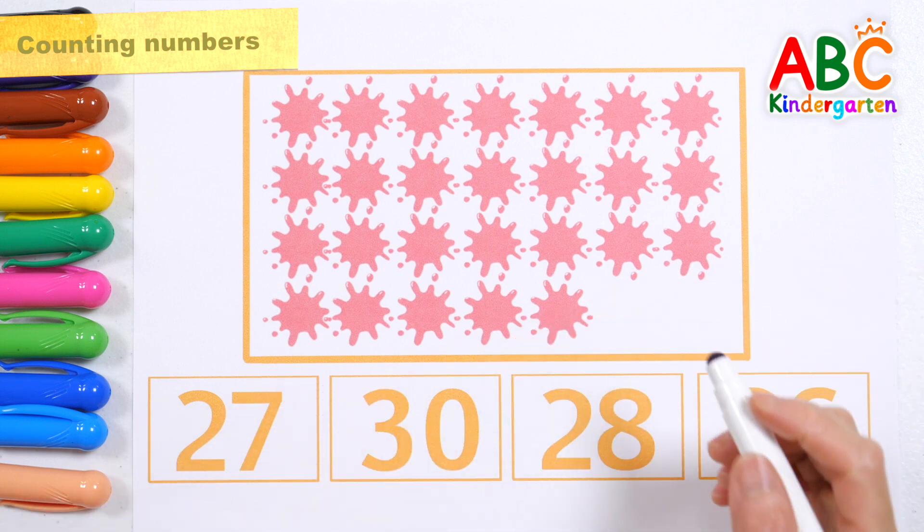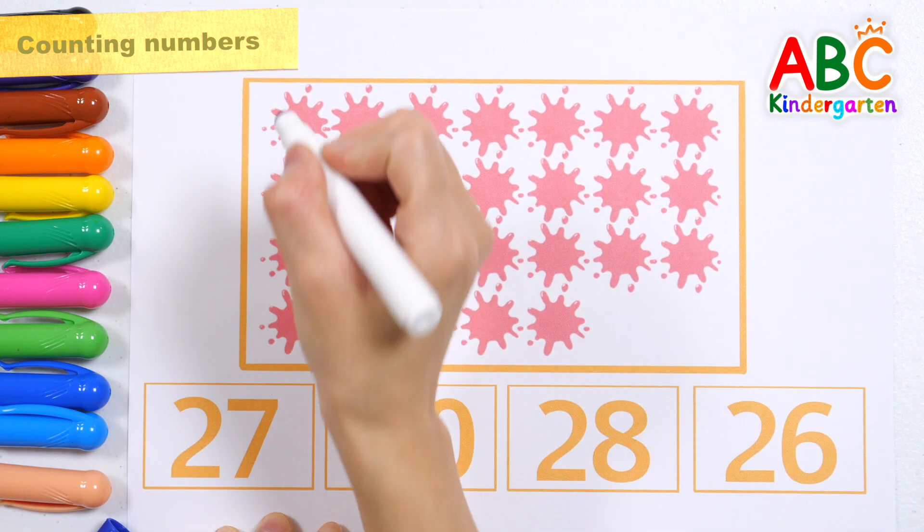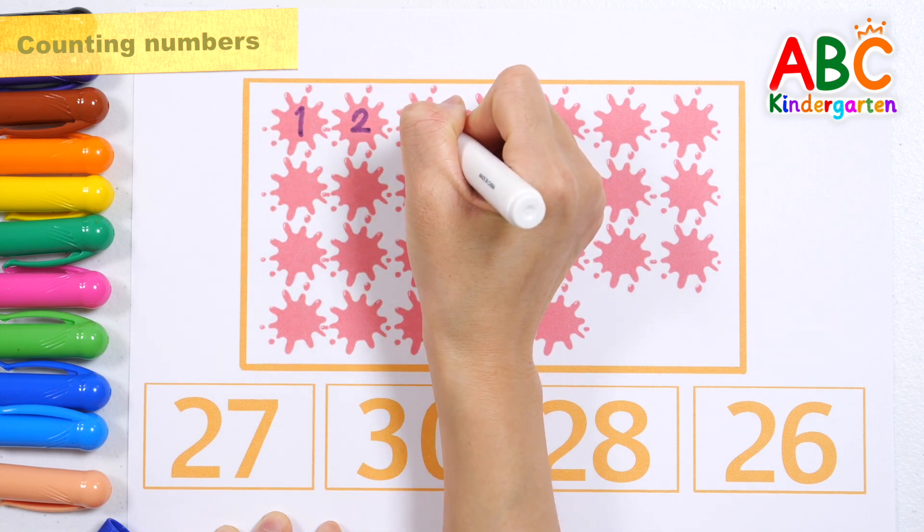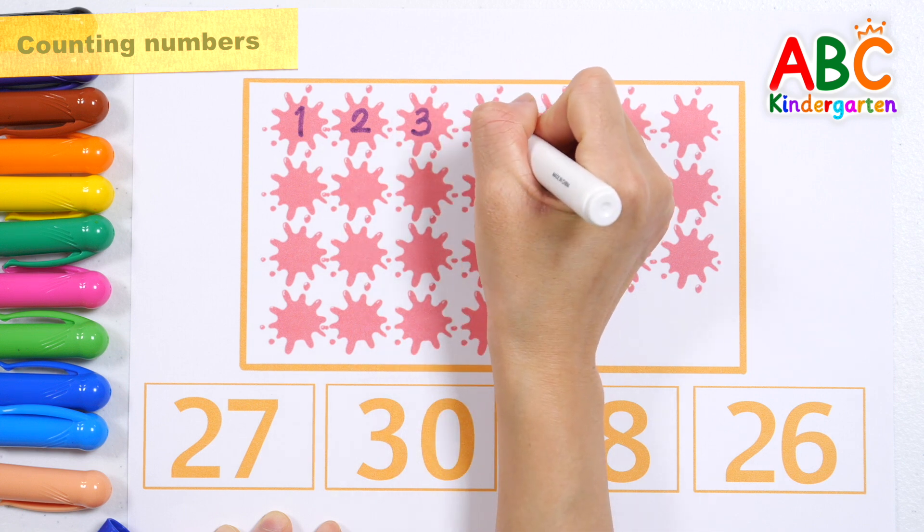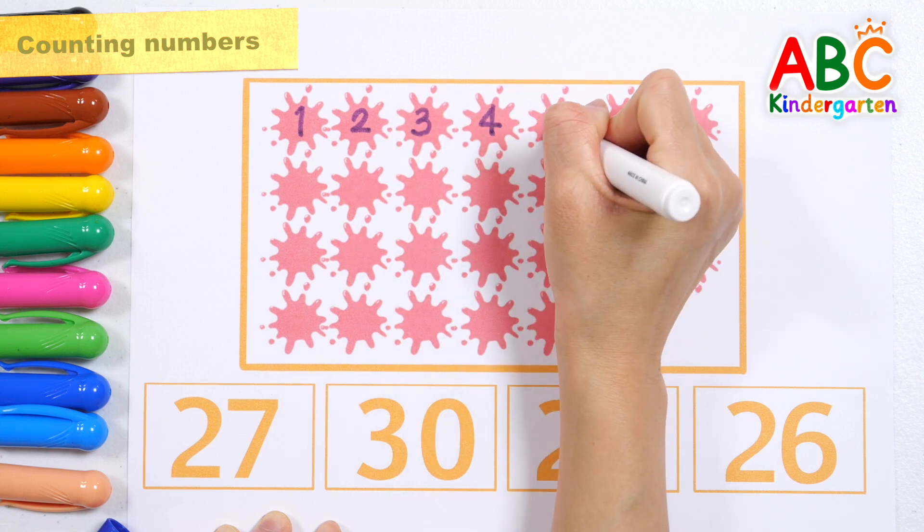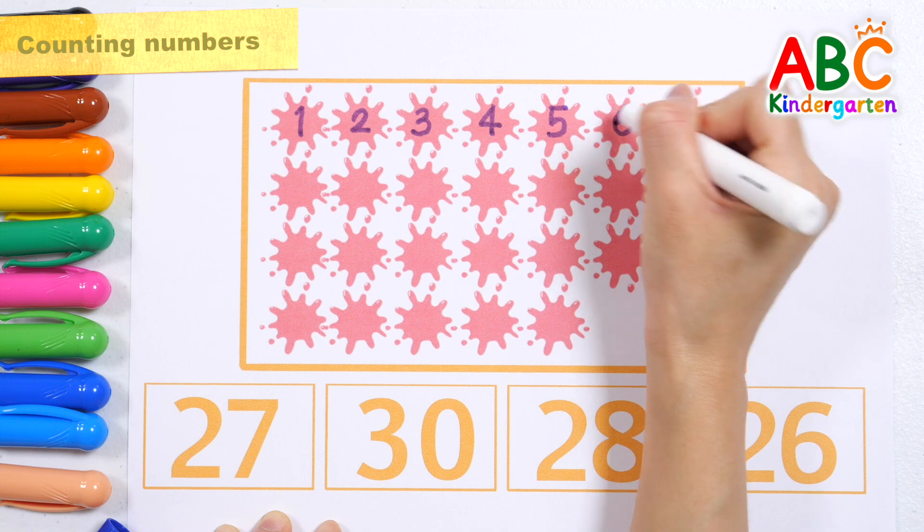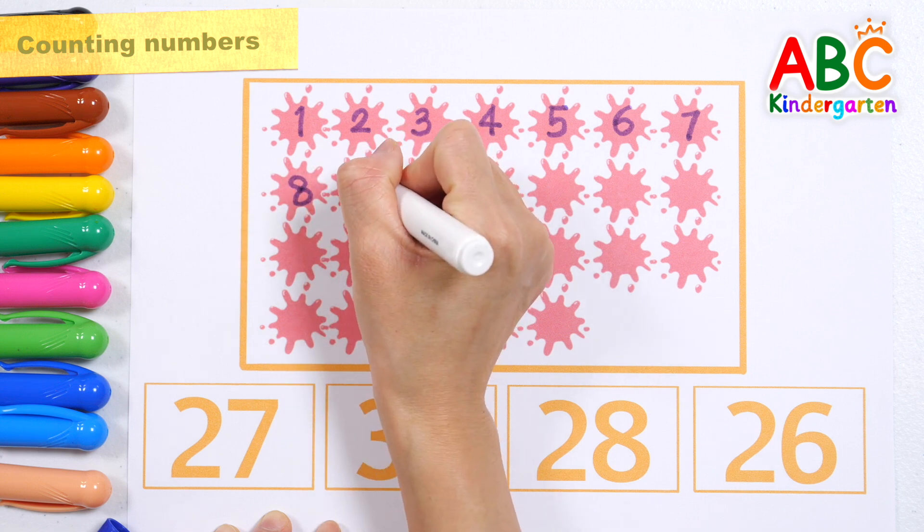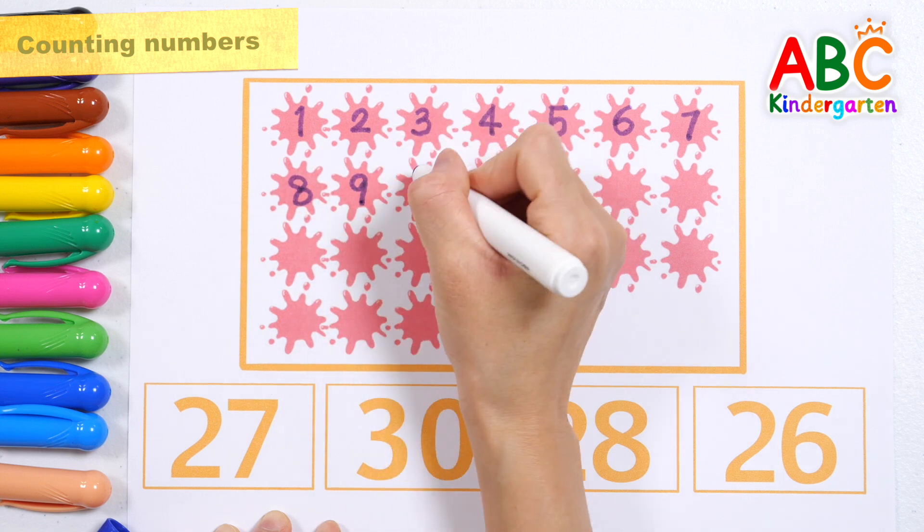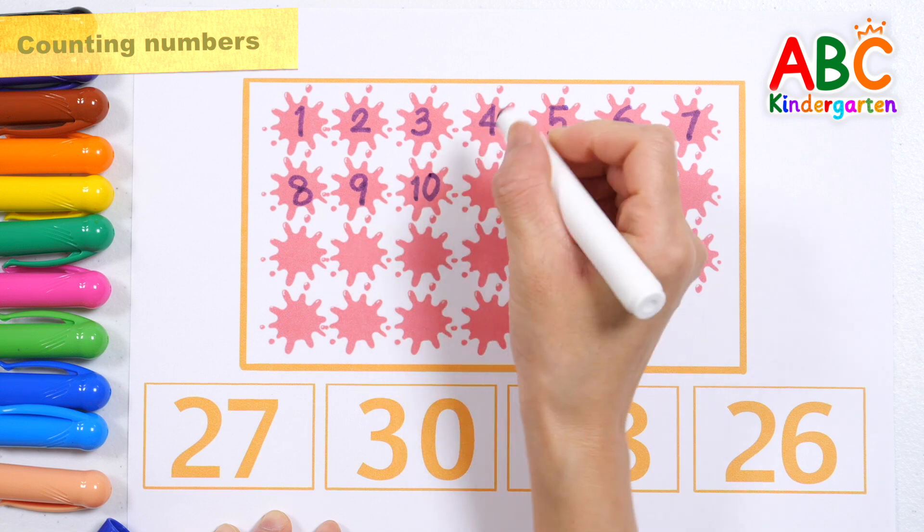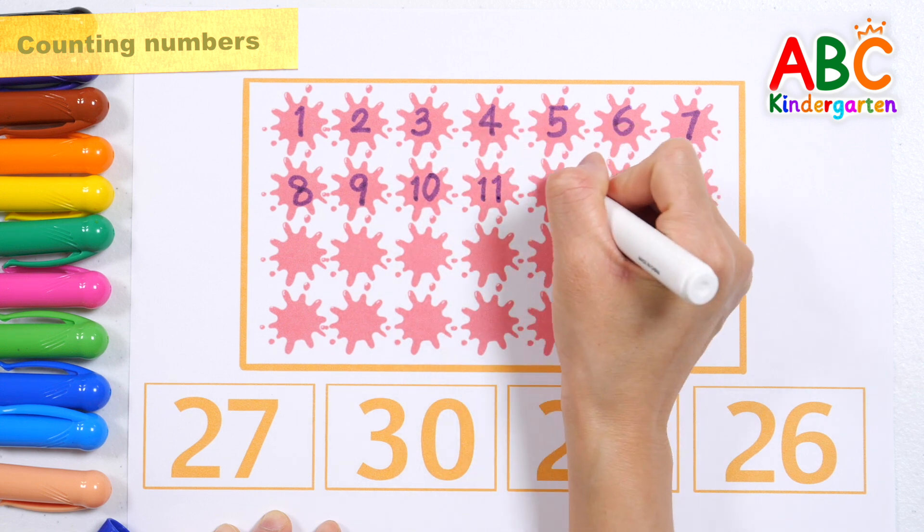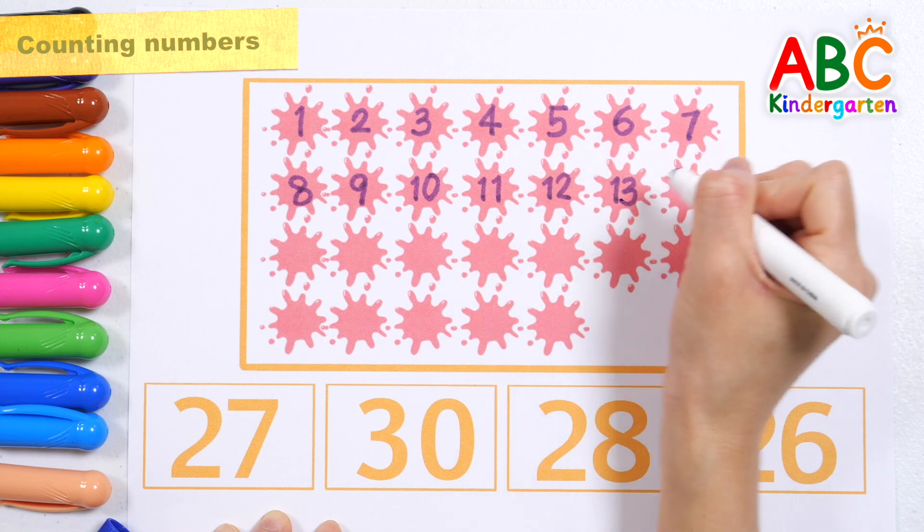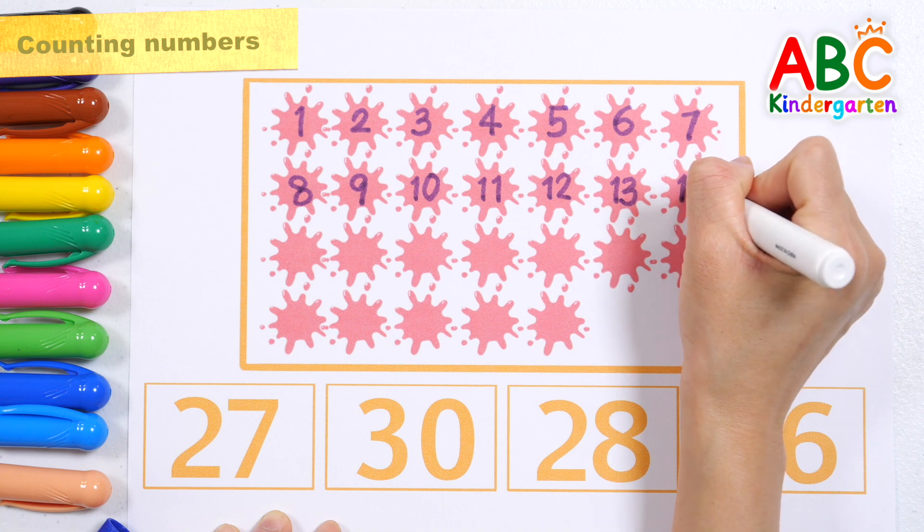Shall we learn how to count by writing numbers? 1, 2, 3, 4, 5, 6, 7, 8, 9, 10, 11, 12, 13, 14.